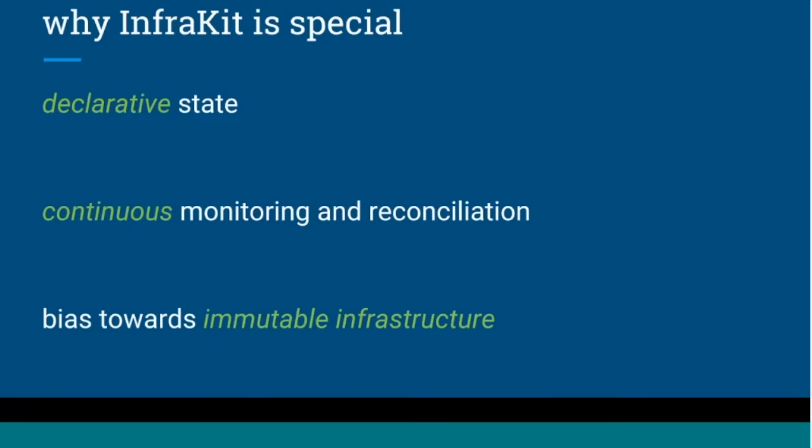Finally, we're trying to bias the system towards immutable infrastructure. You'll notice that in some parts of the system there are verbs like 'create' and 'delete,' but there is no 'update.' By design, we really want to encourage embracing immutable infrastructure so that overall management of systems and infrastructure is simpler and there are fewer edge cases to think about when managing machines.